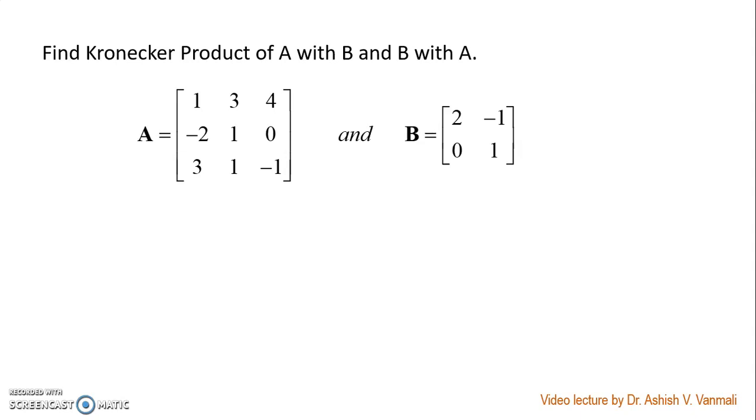Consider this problem. We want to find the Kronecker product of A with B and B with A. Matrix A is given like this and matrix B is given like this. You can see that both these matrices are of different sizes. Let us go for finding the Kronecker product of A with B first.